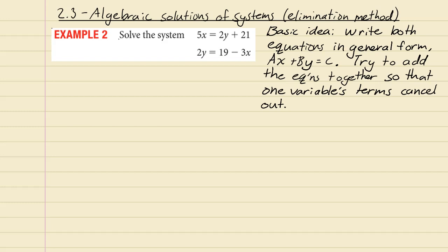Once you have that, you try to add the equations together so that one variable's terms cancel out. Let's see what that looks like. We'll call this one the green equation and this one the purple equation. Now I'm going to get the 2y from 5x equals 2y plus 21 onto the other side, so 5x equals 2y plus 21. Let's subtract 2y from both sides. 5x and 2y are not like terms, so we write that as 5x minus 2y equals 21.